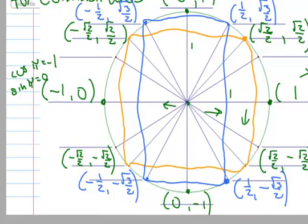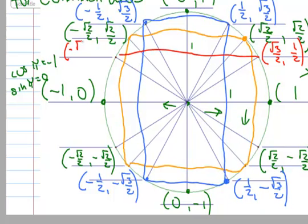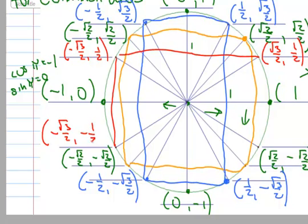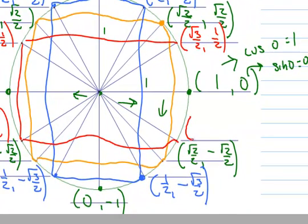Using symmetry to fill in the remaining quadrants for π/6: (−√3/2, 1/2) for 5π/6; (−√3/2, −1/2) for 7π/6; and (√3/2, −1/2) for 11π/6.